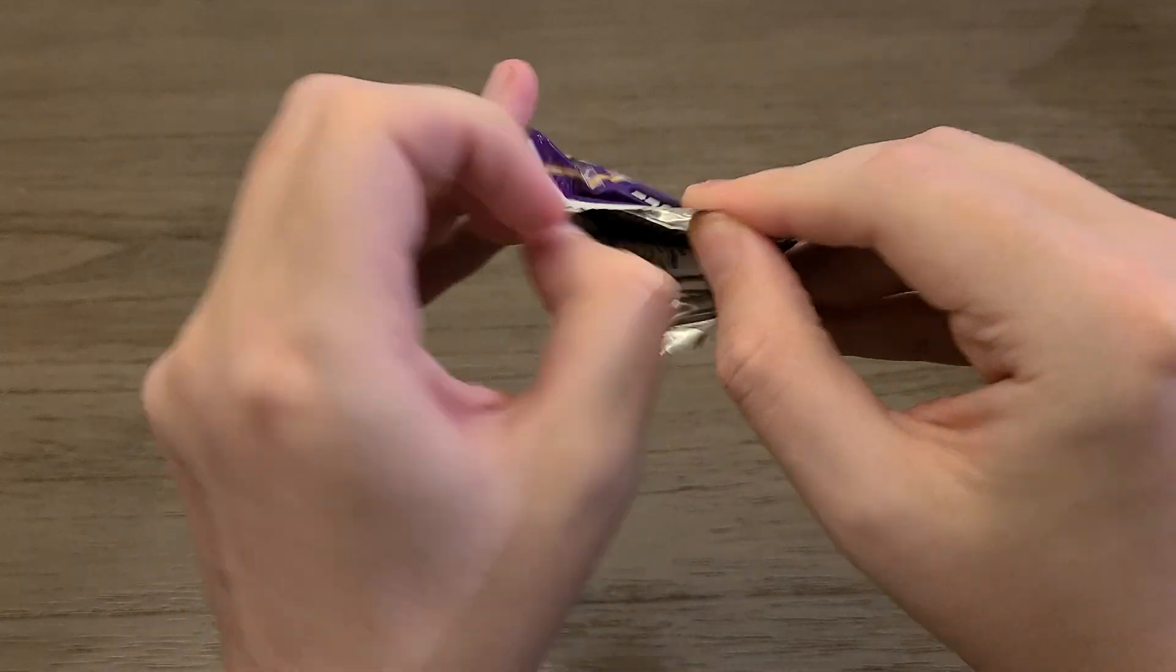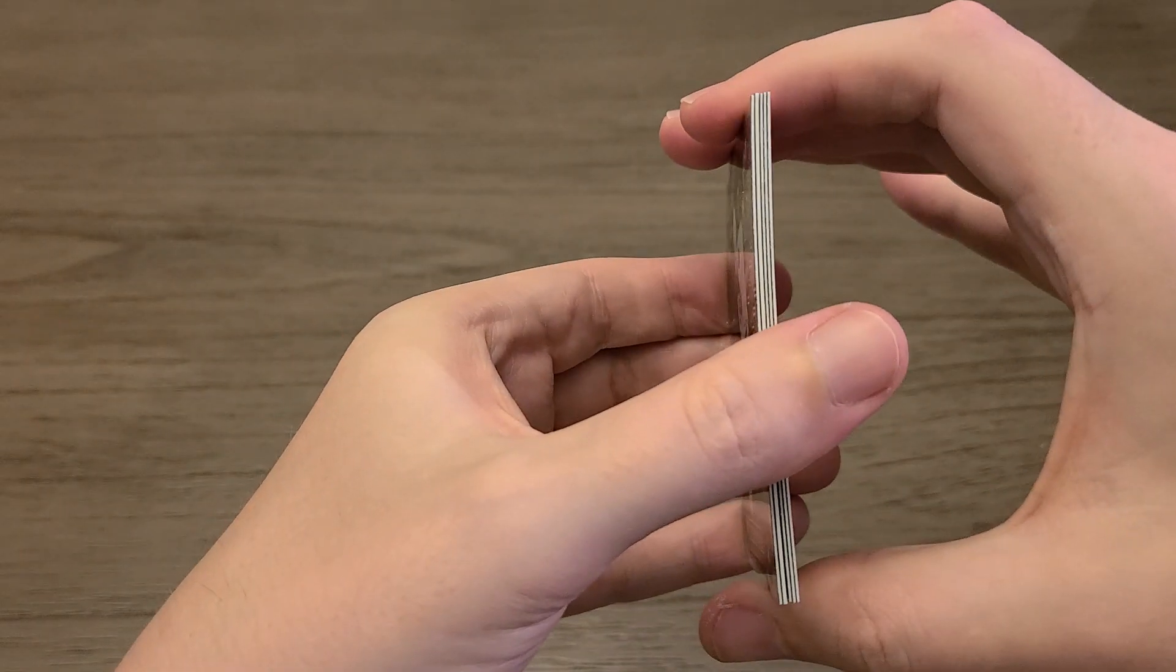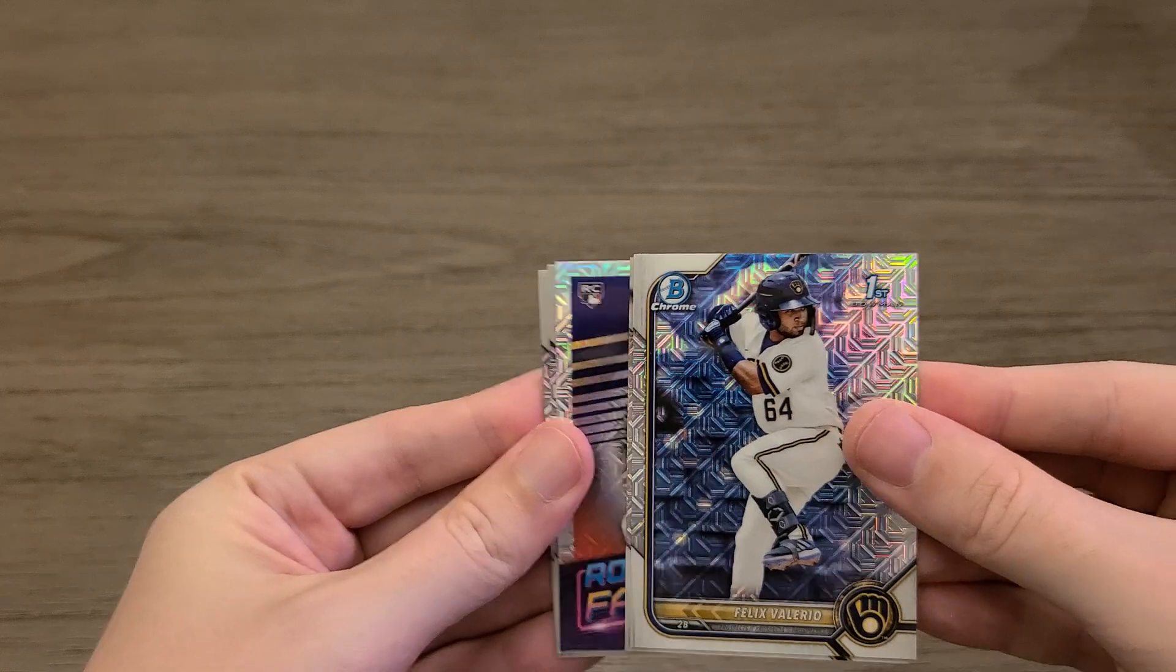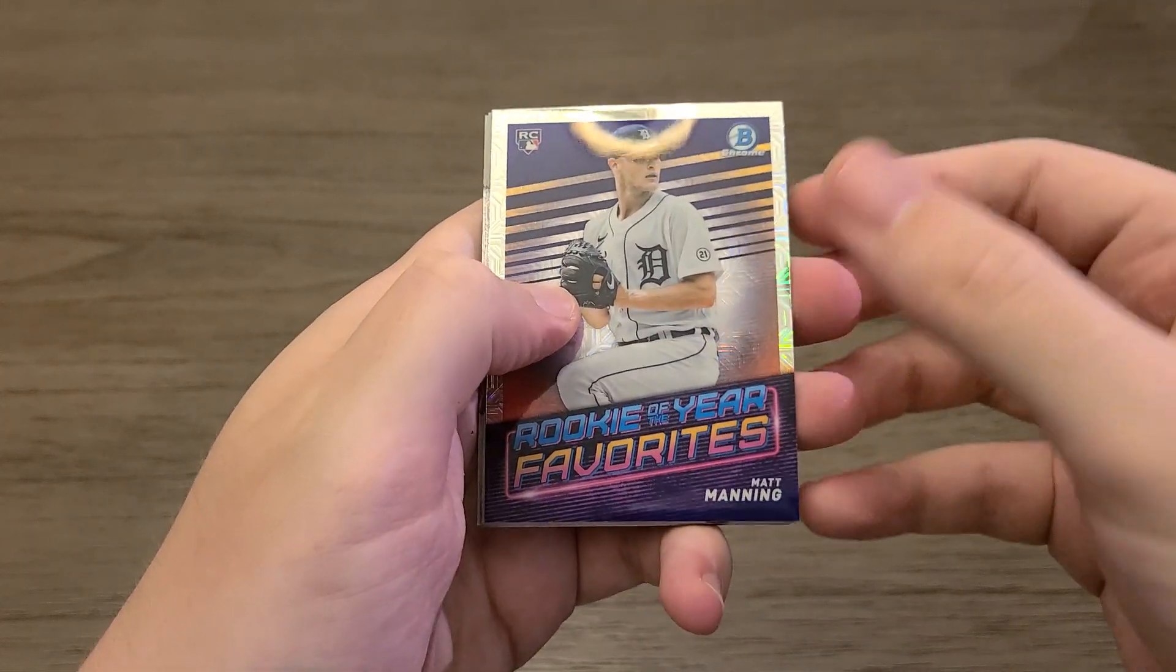Unfortunately, I don't even think Elijah Tatis is playing baseball anymore. So, eh. And we have a hit in this one as well. Alright. And I don't see any color, so maybe it's an autograph. Matt Manning.